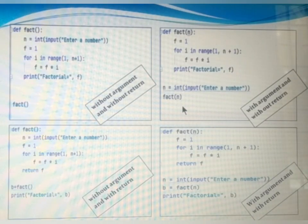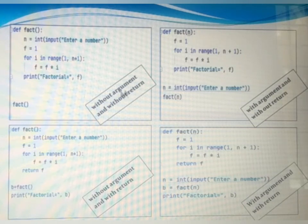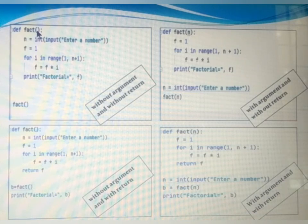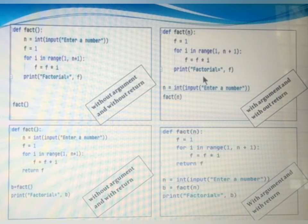We can summarize all four cases: function without argument and without return, function with argument and without return, function without argument and with return, and function with argument and with return. In function without argument and without return, the fact function does not accept any parameter and is not returning anything to the calling statement — it prints the result inside the function definition. In function with argument and without return, the fact function accepts a parameter, and after executing, it is not returning anything to the calling statement.